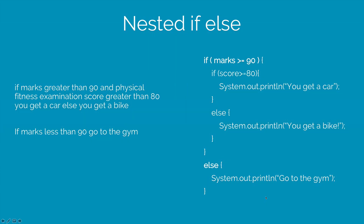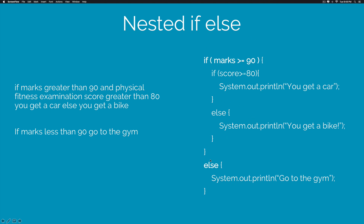And that is how if-else works. You can put an if-else inside either an if statement or an else statement itself — you can do this infinitely. You can have if-else several times in several different places if you want. So the idea is: marks should be greater than or equals to 90. As long as the marks are greater than or equals to 90, one of two things can happen — either the score can be greater than 80, in which case you will run the print statement that says you get a car, otherwise you will get a bike. But if the marks greater than or equals to 90 condition is false, then we won't be executing any of this. We will jump directly to the else statement at the bottom which says go to the gym.